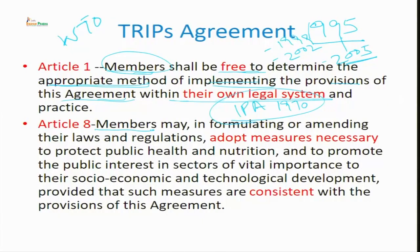Although we have implemented these provisions, we can also refer to Article 8: members, in formulating and amending their laws or regulations, may adopt measures necessary to protect public health. As we have only granted one compulsory license to one company, we can also protect public interest by inserting sections 3, 4, or 84 to protect the interest of general public.